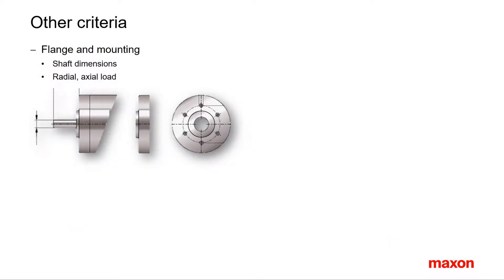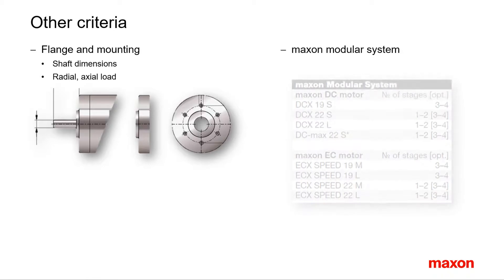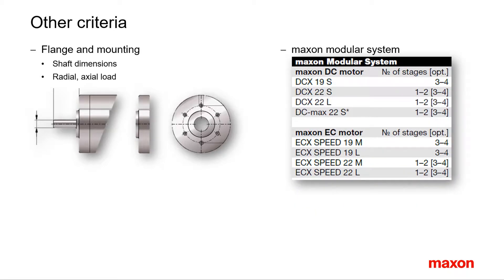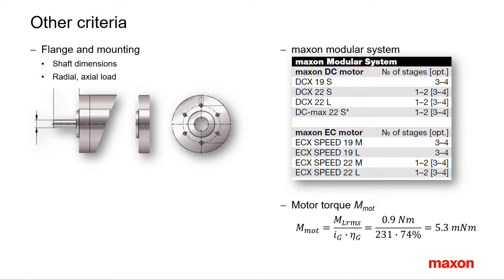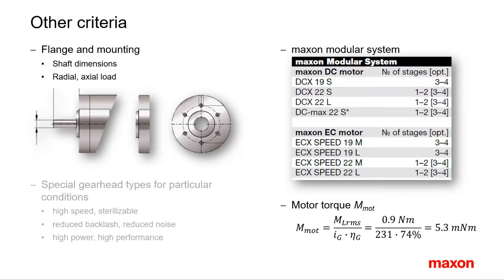In addition to considerations about torque, power, and speed, there are other criteria for the selection of gearheads. The first one is the mechanical interface: how is the gearhead going to be fixed, and how about the shaft diameter and length? Is there a flat or even a keyway needed for connecting the load? How large are radial and axial loads on the shaft? Check also the max and modular system for suitable motor types in combination with this particular gearhead. Is it possible to find matching motors with sufficiently high torque? In our case, the RMS motor torque amounts to about 5.3 mNm. Particular conditions require special gearhead types: sterilizable versions, gears with specially high torque or high input speed, heavy duty versions for high pressure, vibration and temperature, or other special gearheads.